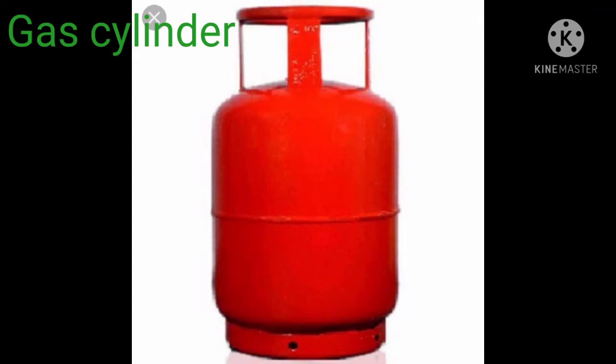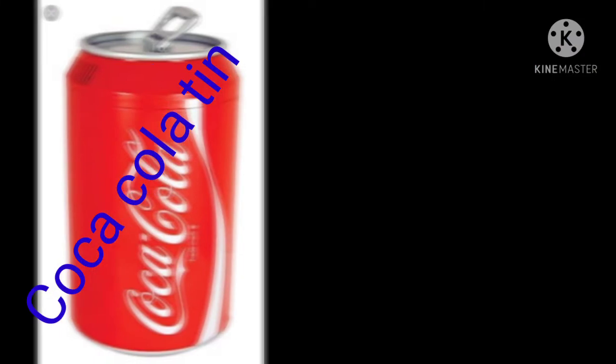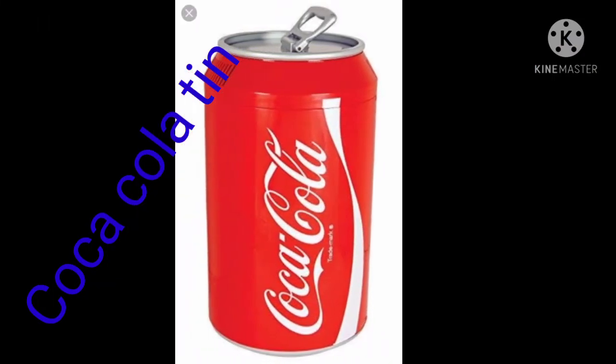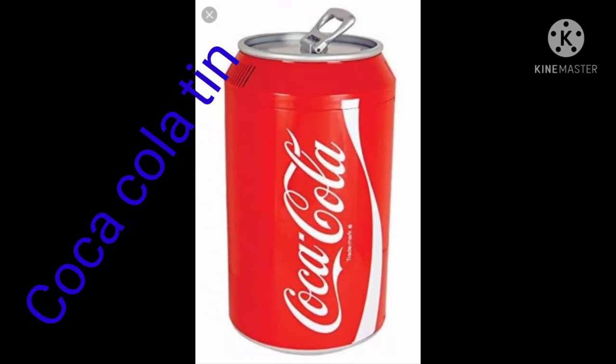Now look at this picture. What is this? This is a gas cylinder. And what is the shape of a gas cylinder? Its name itself shows — cylinder. Now see, which picture is this? Coca-Cola tin. What is the shape of this tin? Cylinder. Koi bhi cauldering ka tin hota hai, uska shape kya hota hai? Cylinder.